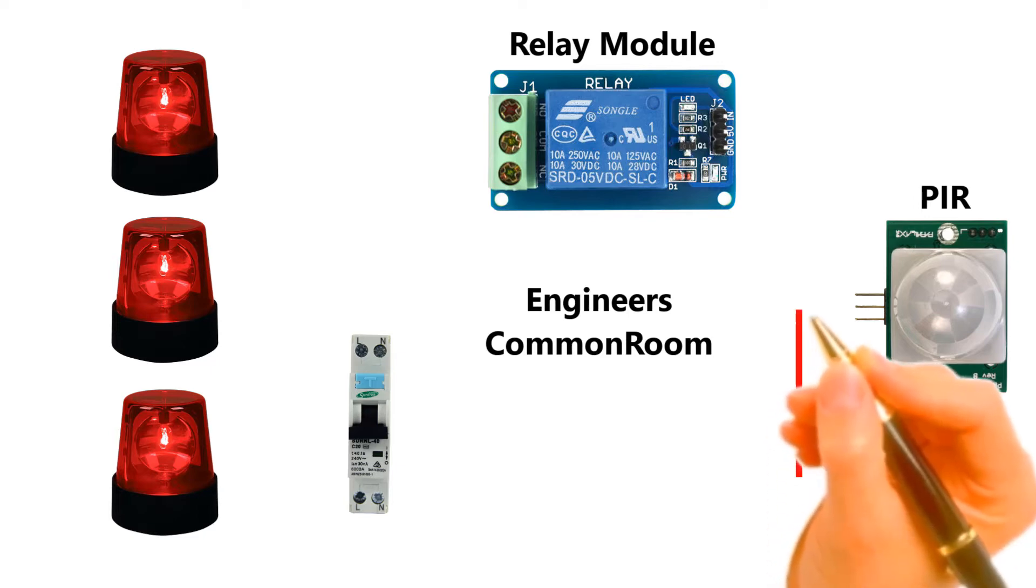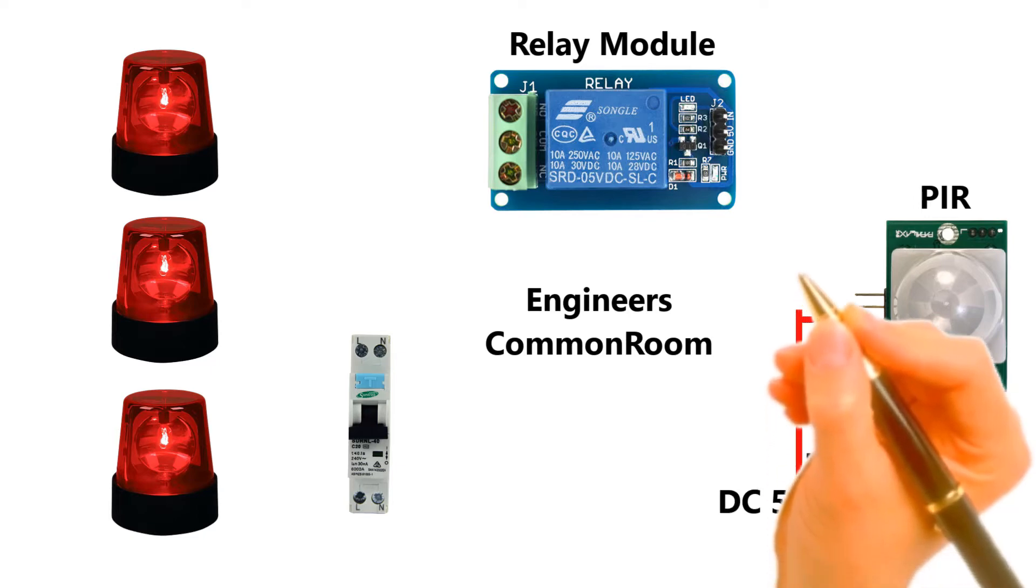I added a 5 volt line to the PIR sensor and relay module for operating.